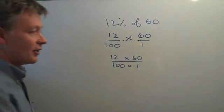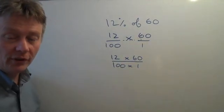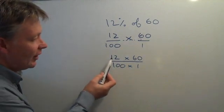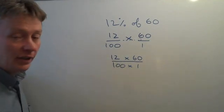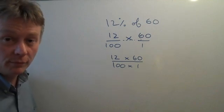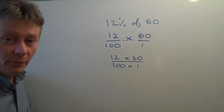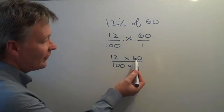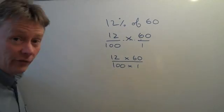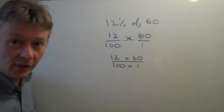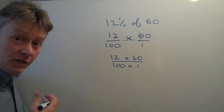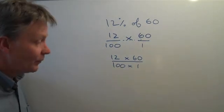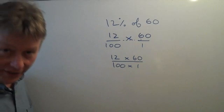Now with any fraction, whatever you do to the top, you also need to do to the bottom. So if I look at that, I can find a way to make these numbers a little bit smaller and easier to deal with. Here I have 60 and here I have 100, so I'm going to divide the top and the bottom of this fraction by 10.